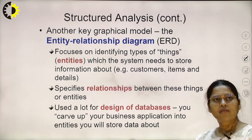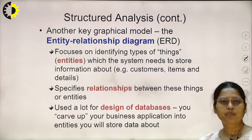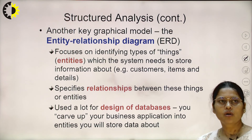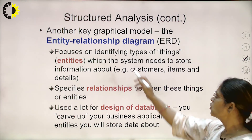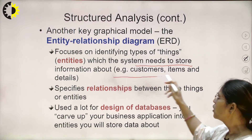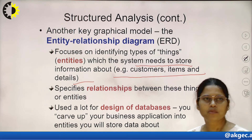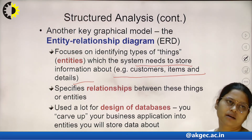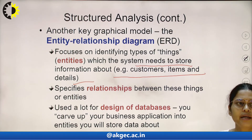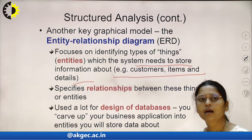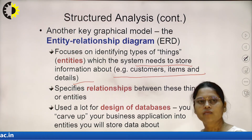The second key graphical model of structured analysis is the ER diagram, which has already been described in this lecture. The ER diagram focuses on identifying types of entities which the system needs to store information about — for example, customer information, item details, student information, phone number, address, etc. It specifies the relationship between these entities and is used a lot in the design of databases. We can design the database with the help of ER diagrams, and this is one of the important things in structured analysis.